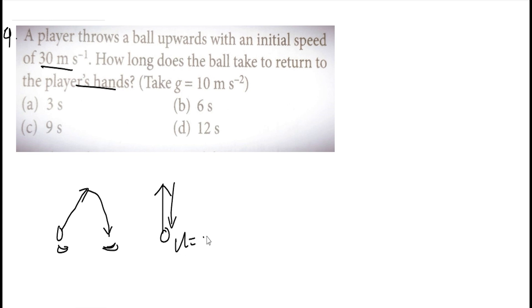So the initial velocity is 30 ms minus 1. We have the data — that's the time. This is what's important. What's the concept? It's very easy, logically thinking about it.